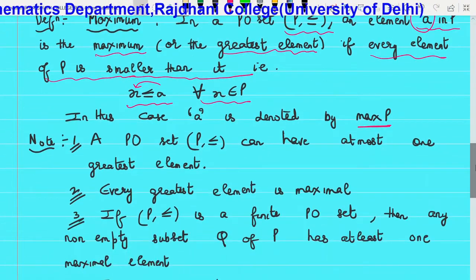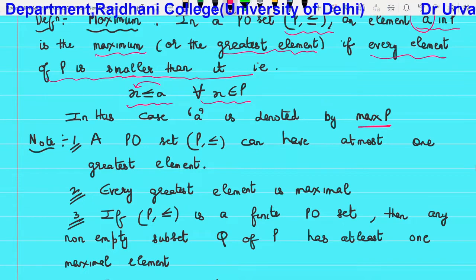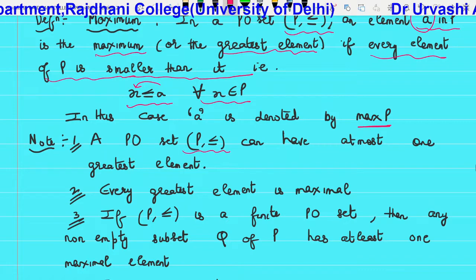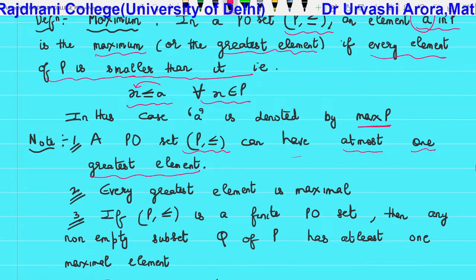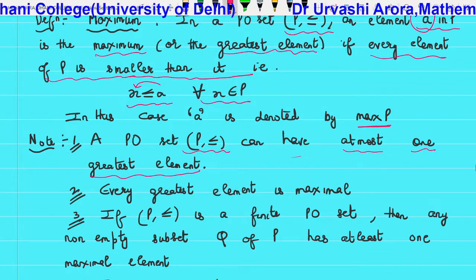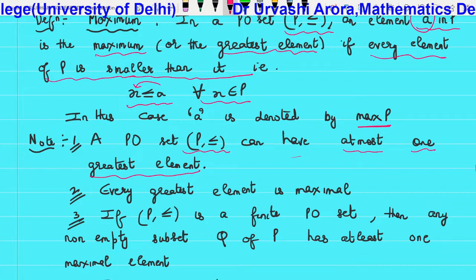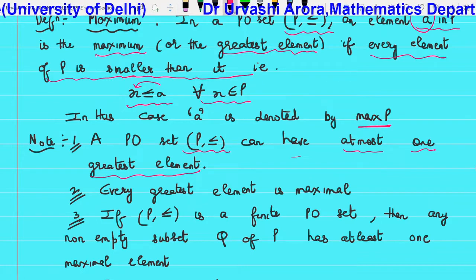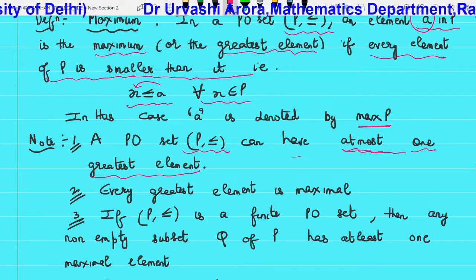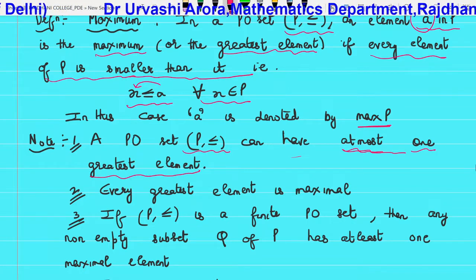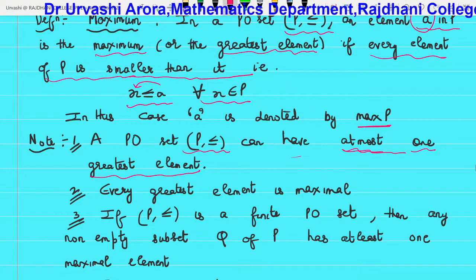A few notes: a PO set may or may not have a maximum, but if you are given a PO set P, it can have at most one maximum — at most one greatest element. A maximum is also called the greatest element. So the maximum possible number of maximum elements is one. Either a PO set has one maximum or it has no maximum, but it cannot have two maximums.